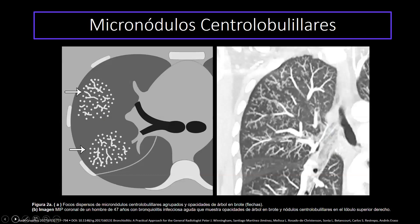En esta imagen vemos lo que son los micronódulos centrolobulillares. Se les define cuando tienen un diámetro menor de 3 milímetros. En los cuadros de bronquiolitis, estos micronódulos van a estar agrupados y no van a afectar la pleura pulmonar. También se va a formar el patrón de árbol en brote. En el lado derecho hay una tomografía de tórax en corte coronal donde se evidencia el patrón en árbol en brote y la presencia de nódulos centrolobulillares.